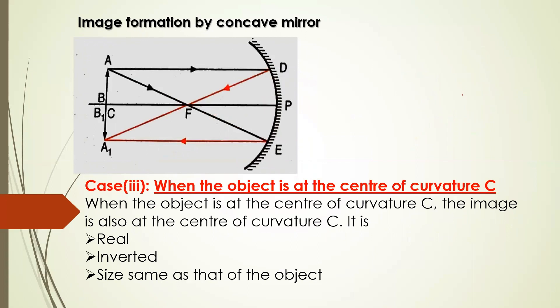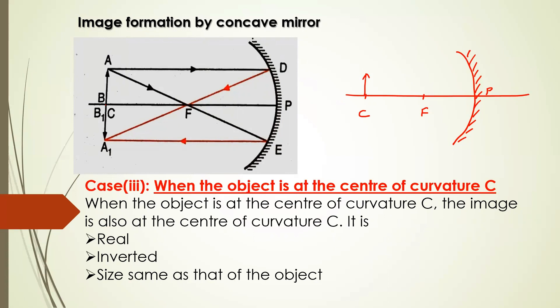The next case is when the object is at the center of curvature. We have placed the object at the center of curvature. We will draw a concave mirror, draw the principal axis, mark P, then F, and your C. The object AB is placed at C. We will take two rays here.